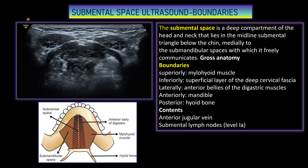Inferiorly it is bounded by the superficial layer of the deep cervical fascia. Laterally there will be the anterior belly of the digastric. Anteriorly it is bounded by the mandible, and posteriorly by the mylohyoid bone. The contents include the anterior jugular vein and submental lymph nodes, that is level 1a.